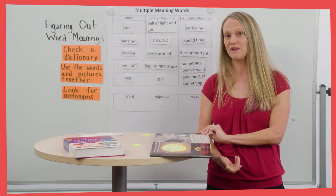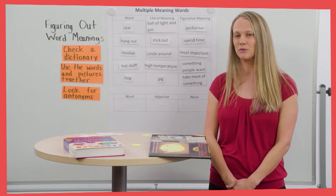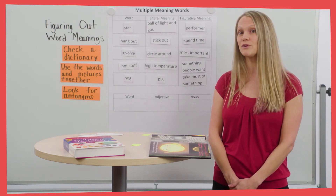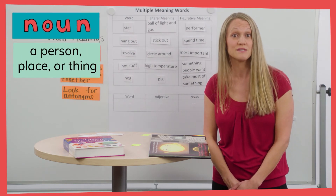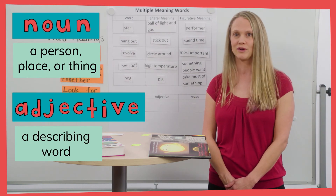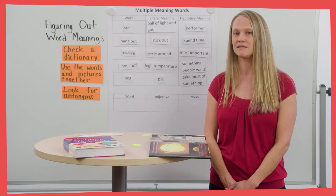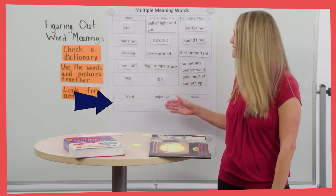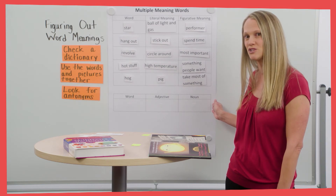This one is a little different than the other multiple meaning words we've found because it doesn't have a figurative and a literal meaning. Instead, the two meanings of this word are just different parts of speech. One is a noun, which is a person, place, or thing, and one is an adjective, which is a describing word. We'll explore stable's two meanings more in just a minute, but notice how this part of the chart is organized a little differently for multiple meaning words that can be used as different parts of speech.